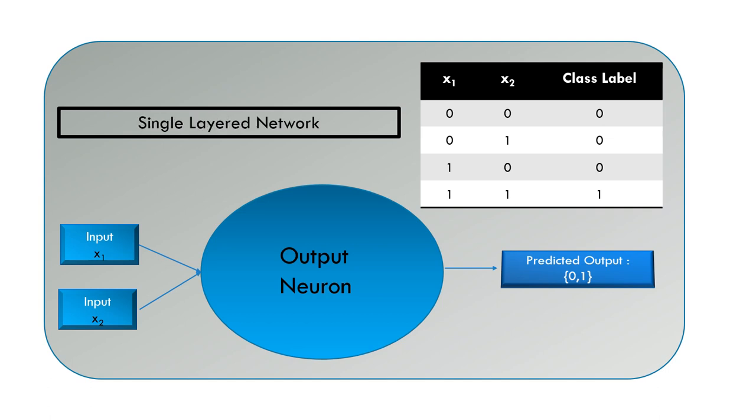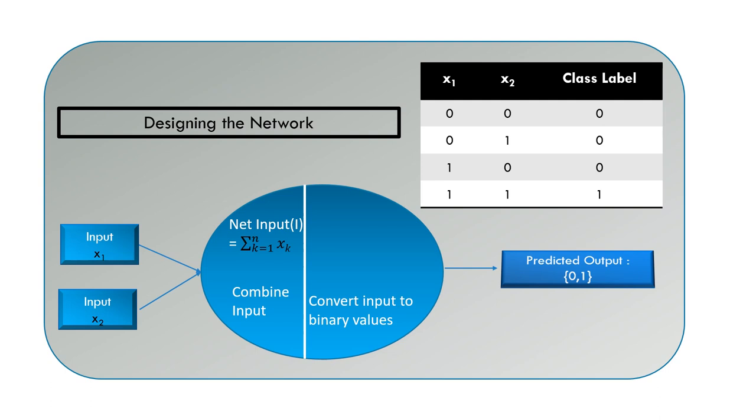The first challenge in processing is to combine the input which is achieved by summing them. The second challenge is to get the output as 0 or 1. This conversion to the required output is performed using a function named the activation function.